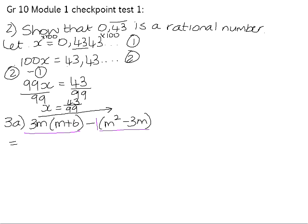So we first need to do the multiplication within each term. 3m times m is 3m squared. 3m times 6 is positive 18m. Negative 1 times m squared is negative m squared. Negative 1 times negative 3m is positive 3m.